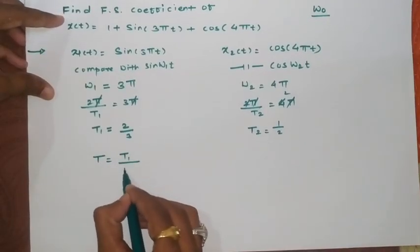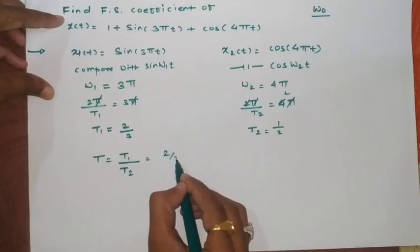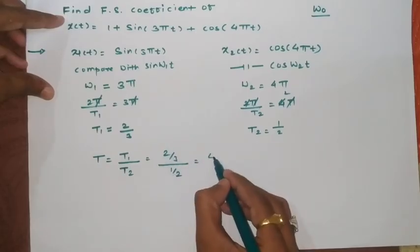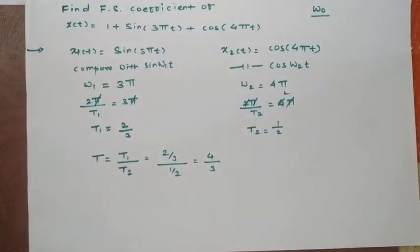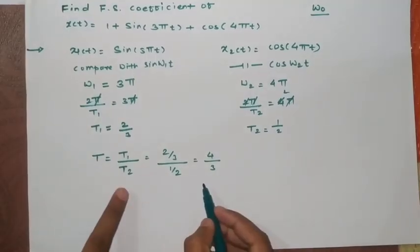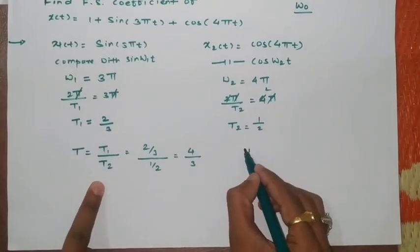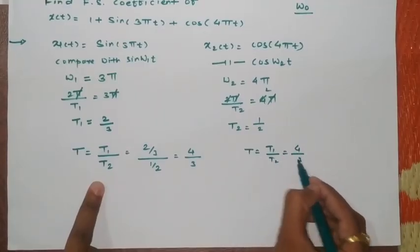So I can put it here as it is a ratio of T1 by T2 which is equals to 2 by 3 upon 1 by 2. So this will go over here and we will get this term as 4 by 3. Now once you got this 4 by 3 I can rearrange this term.